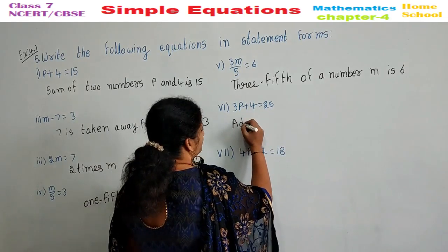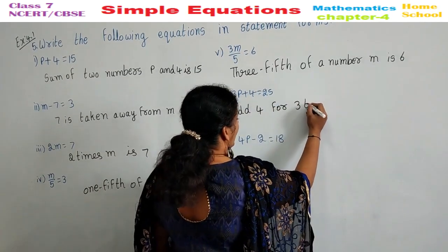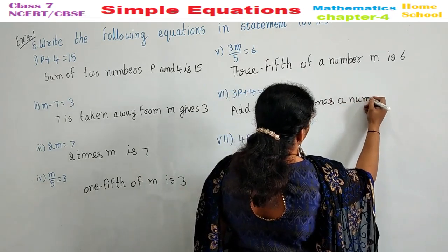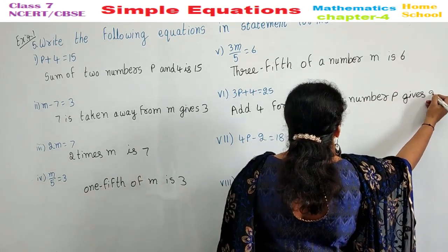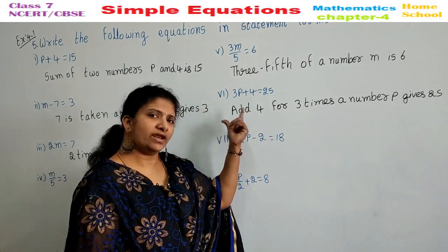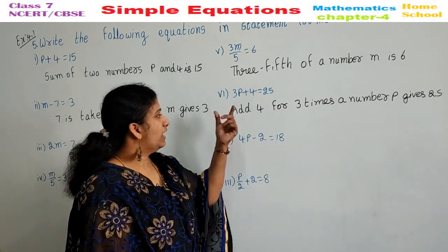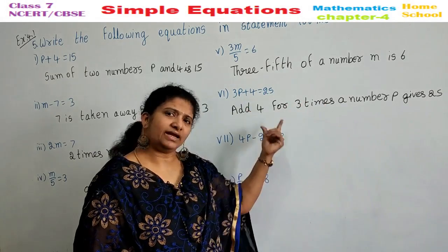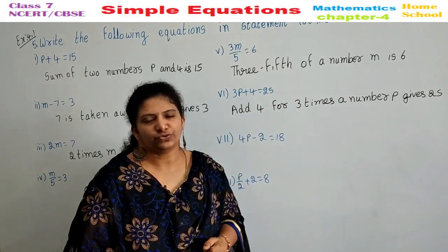Sixth one: Add 4 for 3 times a number M gives 25. Or you can write: 4 more than 3 times a number P gives 25. You can also write 3 times a number P gives 25.